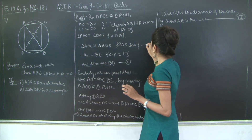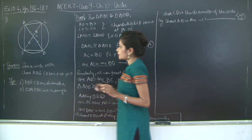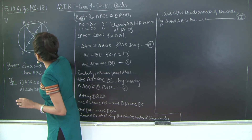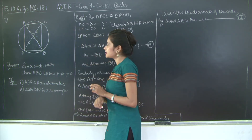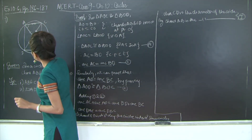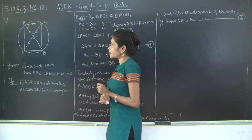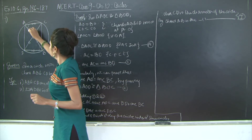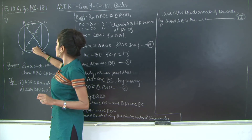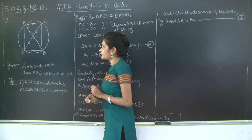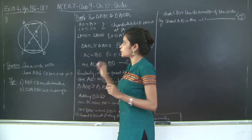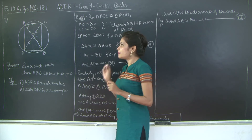From triangle AOC congruent to triangle BOD, we get angle CAO equals angle DBO through corresponding pairs of congruent triangles. Since these alternate angles are equal, AC is parallel to BD by the alternate angle theorem, and also AC equals BD. Therefore quadrilateral ADBC is a parallelogram because one pair of opposite sides is both parallel and equal.